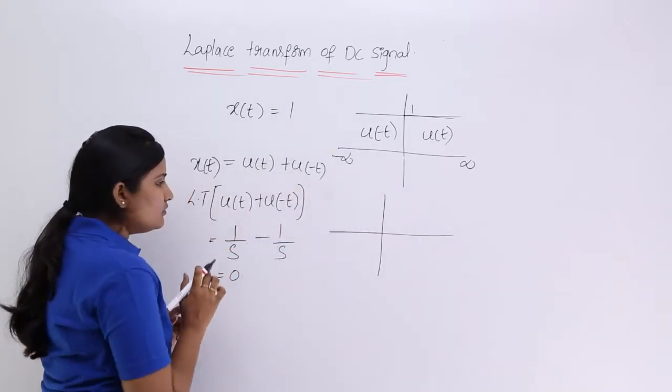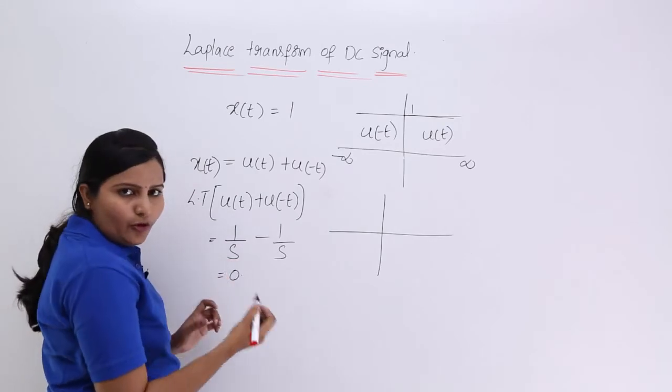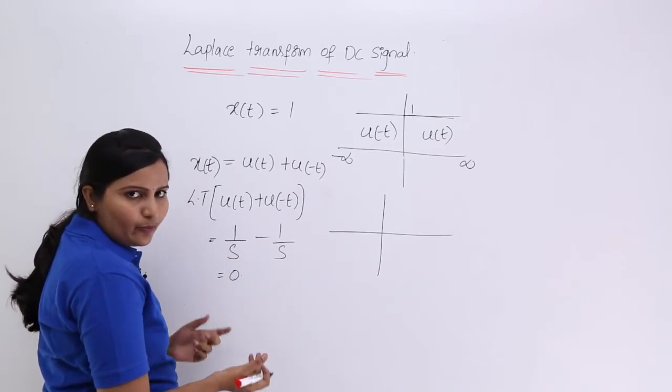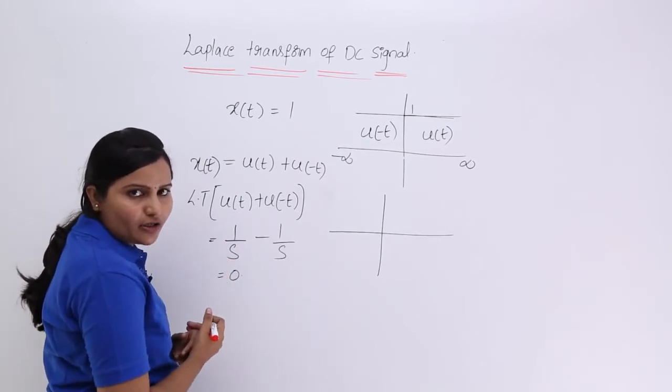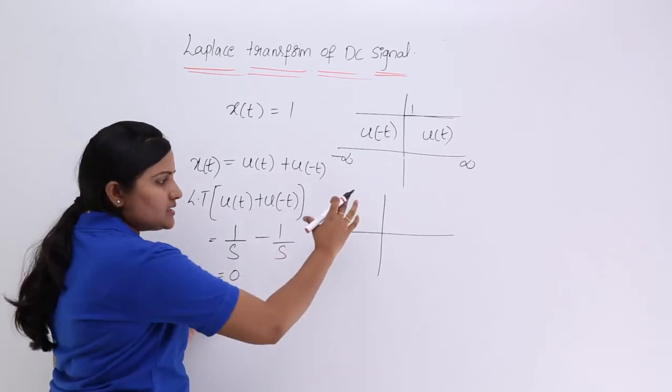So how we will see region of convergence: by equating poles is equivalent to 0, by getting poles by using denominator equivalent to 0, we will get plot for this region of convergence.